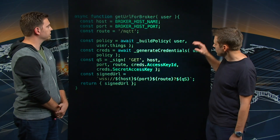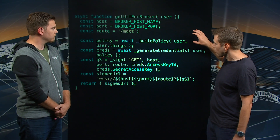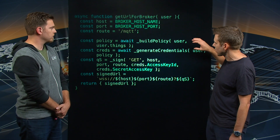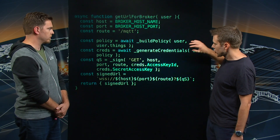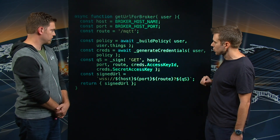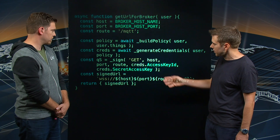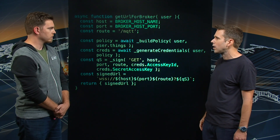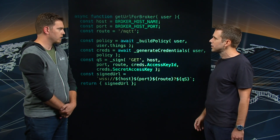So I see here that you've got sort of three main calls that are happening here: build the policy, generate the credentials with the policy, and then finally sign a URL. Can you walk us through what the code's doing here?